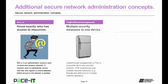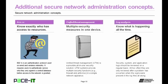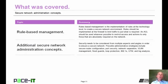You might want to consider unified threat management—multiple security measures in one device. UTM systems provide multiple security functions in a single network appliance, but be aware that a UTM system may also create a single point of failure for your network. Finally, there's log analysis: security, system, and application logs should be reviewed on a regular basis. All too often they are only reviewed after a problem has occurred, when the signs of the problem were present in the log files before any damage had occurred. While reviewing log files may not be fun, they can help to prevent a problem from occurring in the first place.